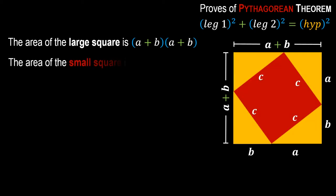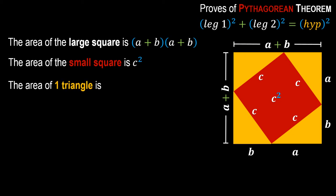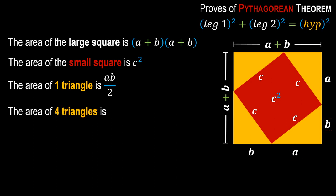Next, the area of the small red square: all sides are c, so the area is c squared. Then, the area of one triangle: the formula for the area of a triangle is base times height divided by two. The base and height are a and b, so the area of one triangle is (a × b) / 2.